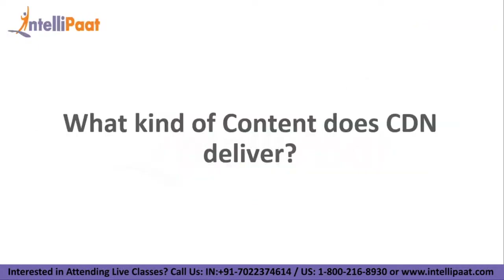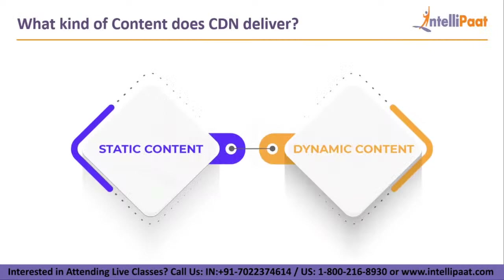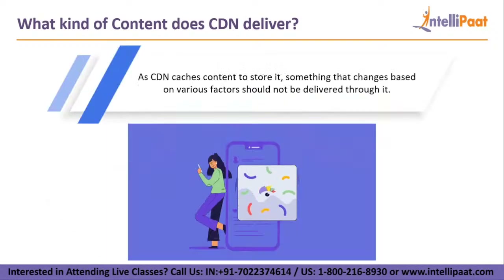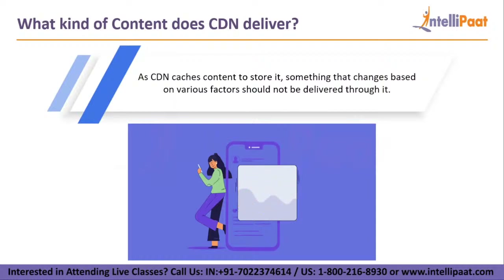Now let's move on to our next agenda: what kind of content does CDN deliver? There are two types of content — static and dynamic. Static content is the one that does not change at all, regardless of time zone, audience, etc. Dynamic content might vary based on recommendations, location, etc. Something that changes based on various factors should not be stored in CDN as it would confuse end users. Static content, on the other hand, is completely safe to be cached on a CDN. It is also good practice to cache content using CDN as it acts as the first layer of security and protects networks from malicious attacks.